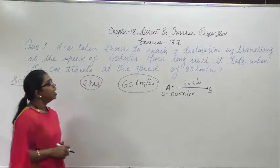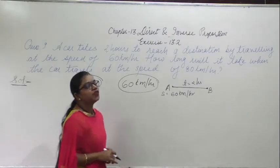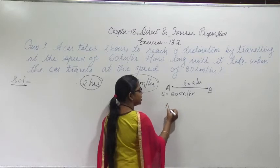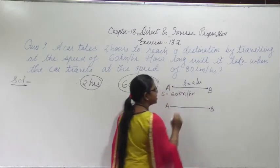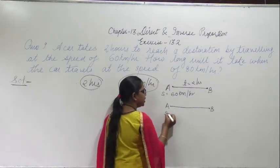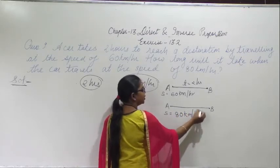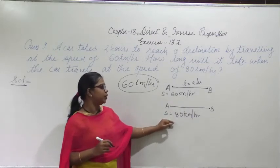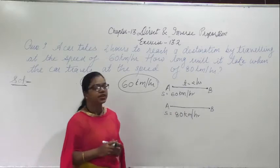Now what it is saying: how long will it take when the car travels at the speed of 80 km per hour? Here the same destination is there, but the speed is given as 80 km per hour. Here it was 60 km, here 80 km — means 20 km is increased, means speed is increased by 20 km.